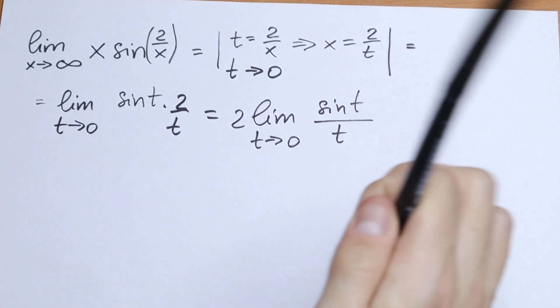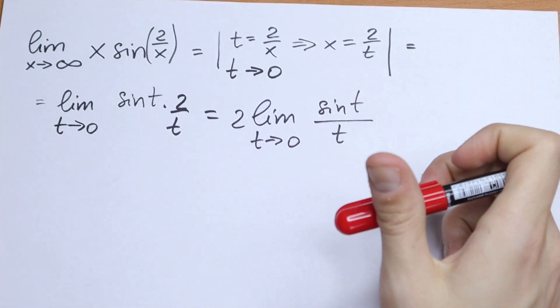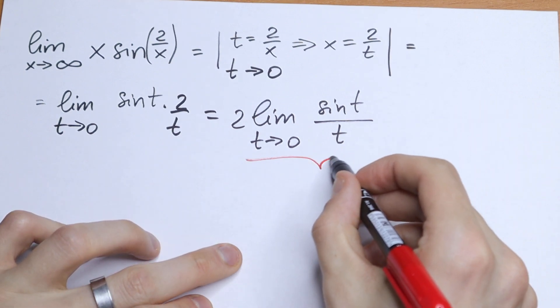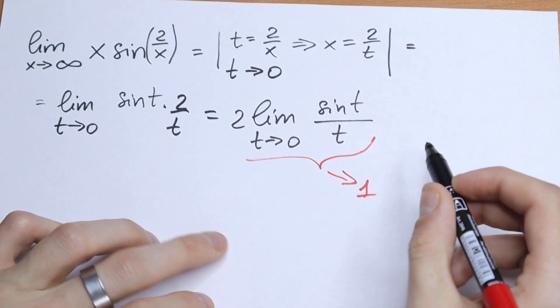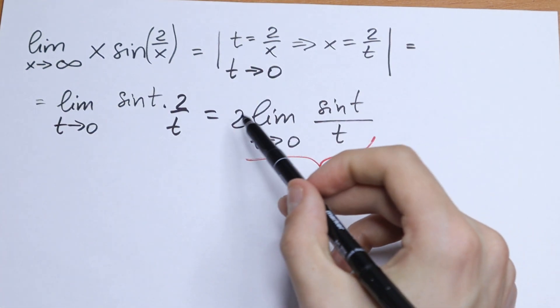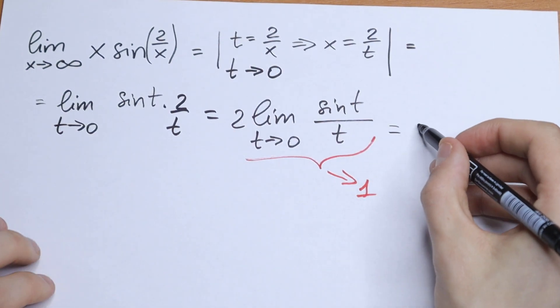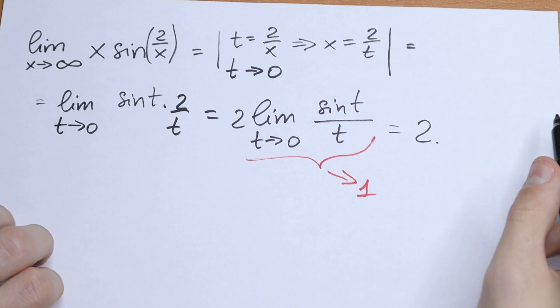We all know that this limit is a perfect limit. So this limit goes to 1 and as a result we will have the last step. 2 times 1 will be equal to 2. And this is our answer.